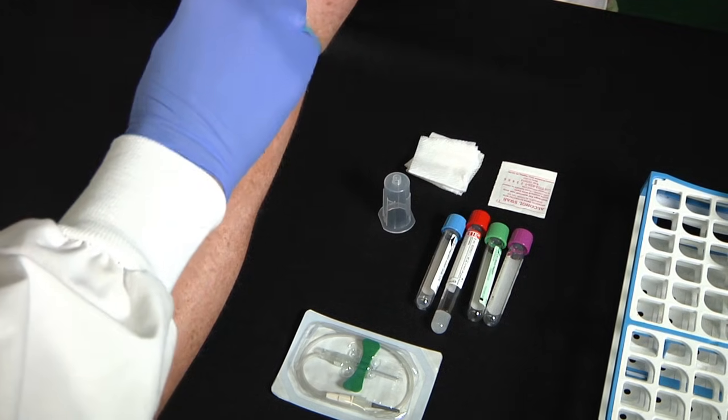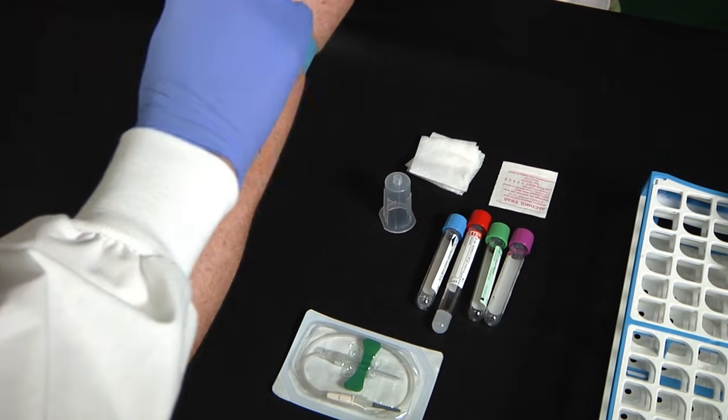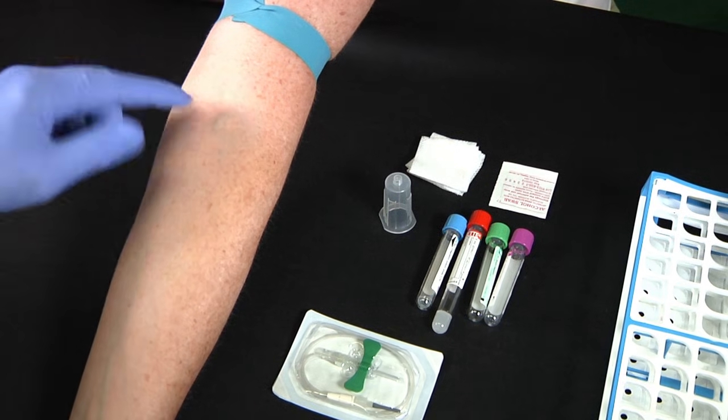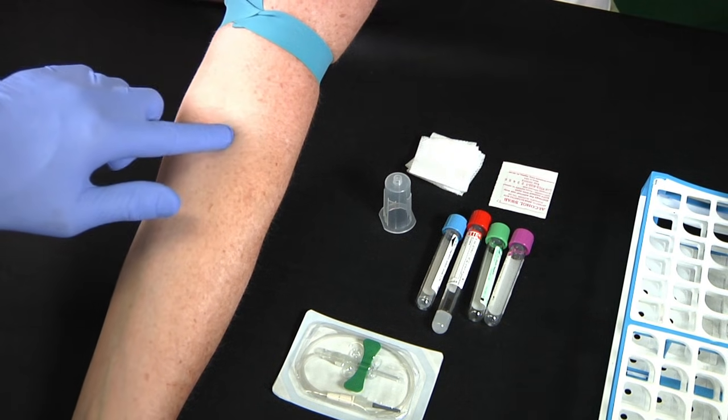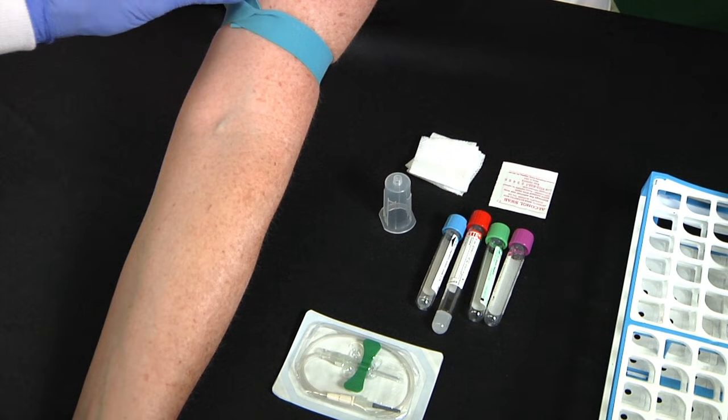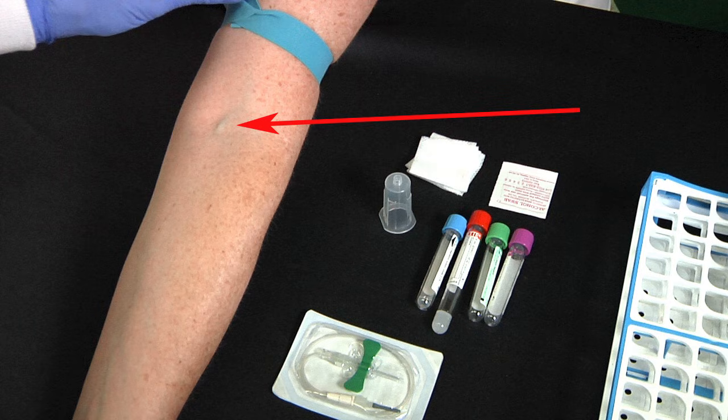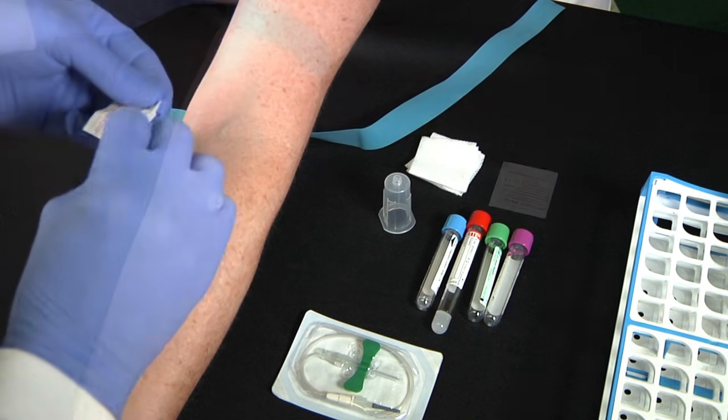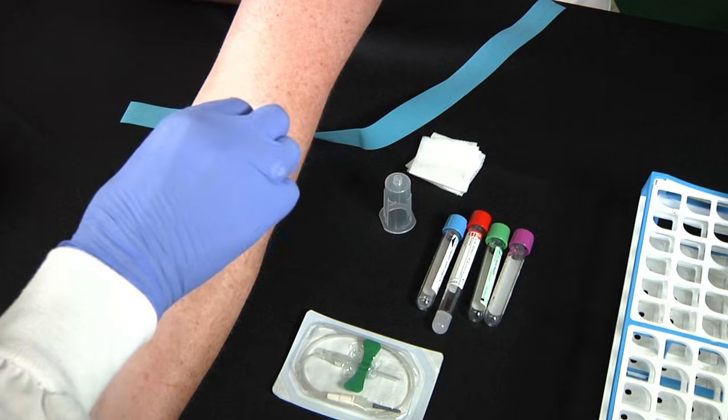I'm assuming that you've properly identified your patient, conducted a thorough survey of available veins and determined a butterfly set is required. Now you see that vein right there? A vein that size does not need a butterfly set. But I'm doing a demonstration here so I'm making it easy on myself by choosing a nice easy close to the surface vein. Next you're going to cleanse the site and allow it to air dry.